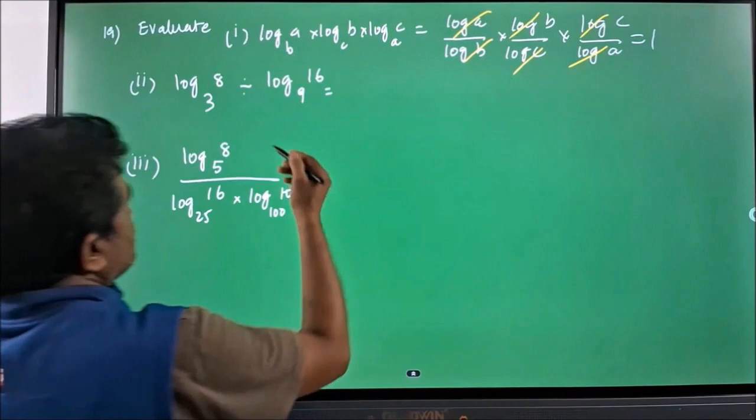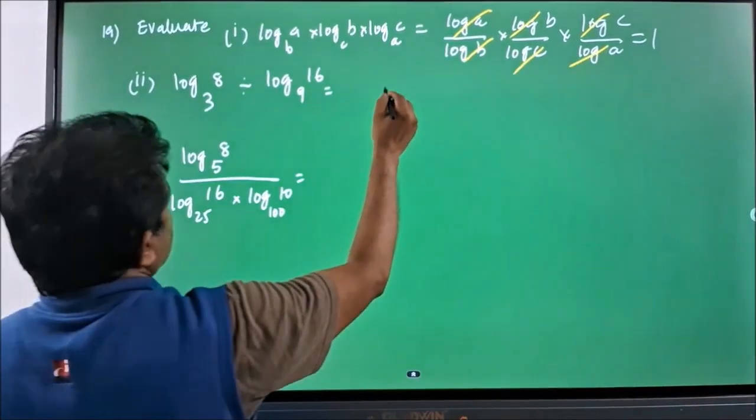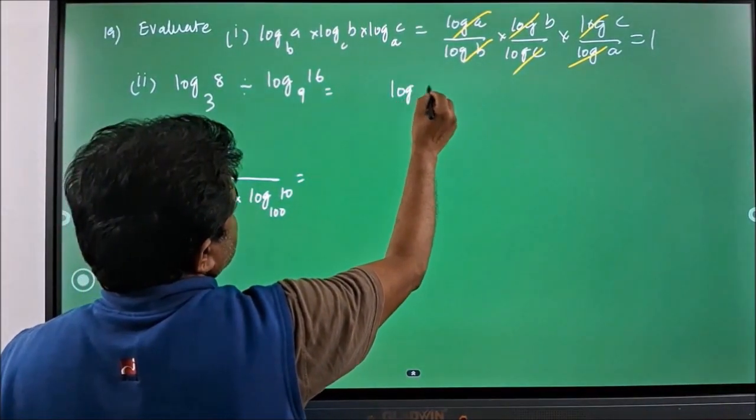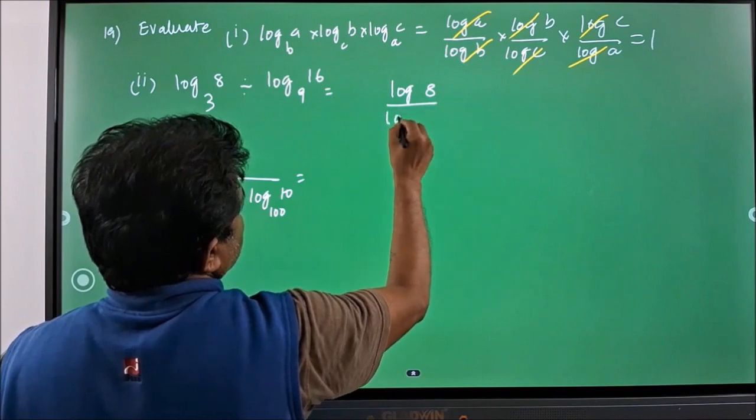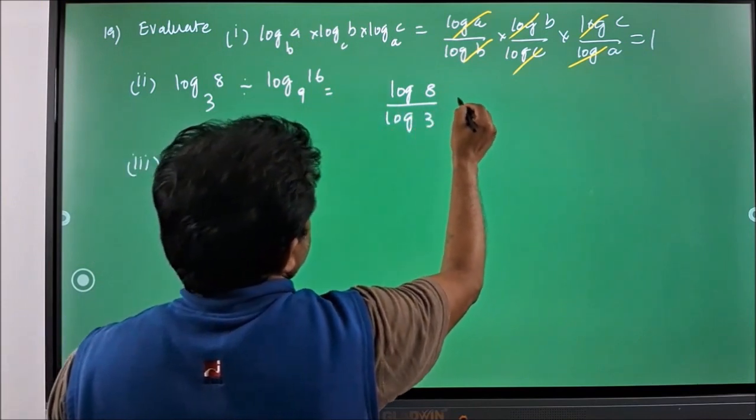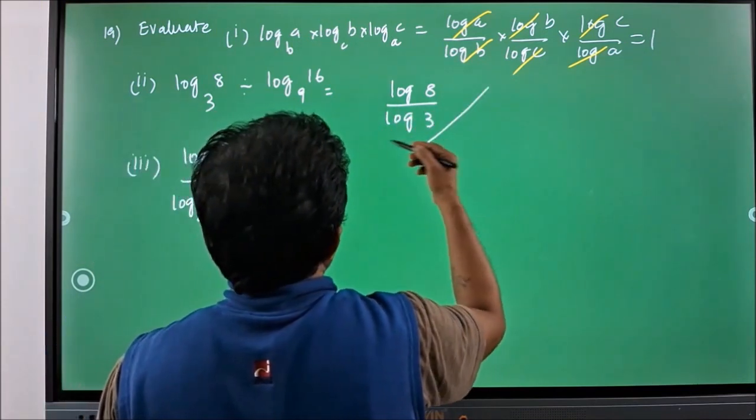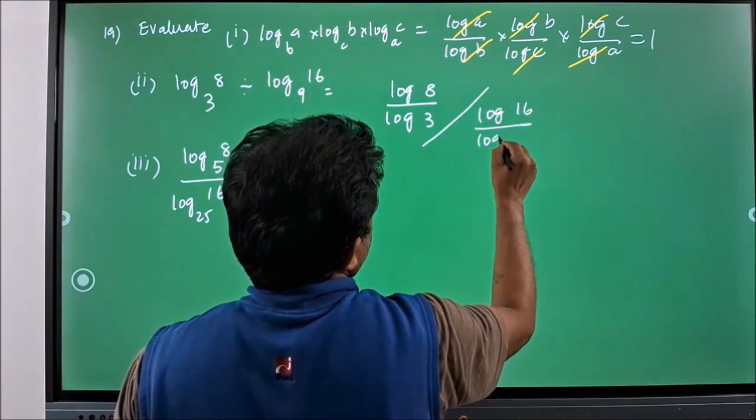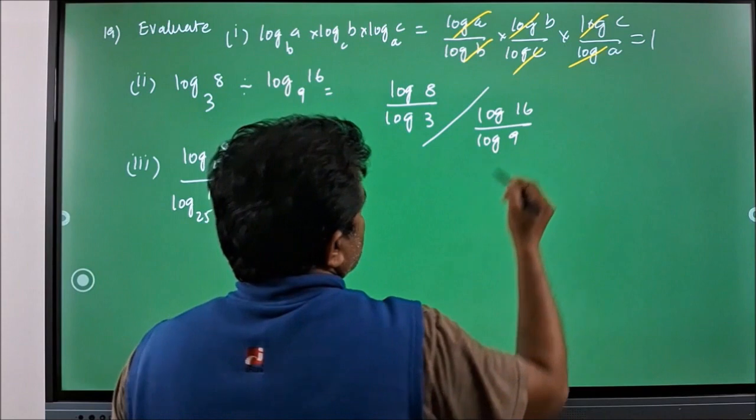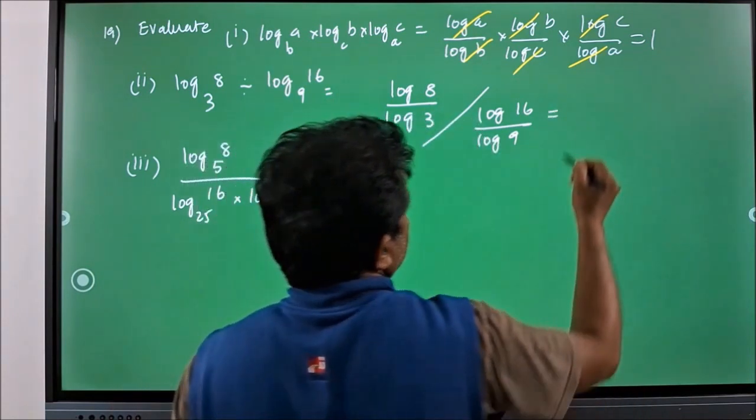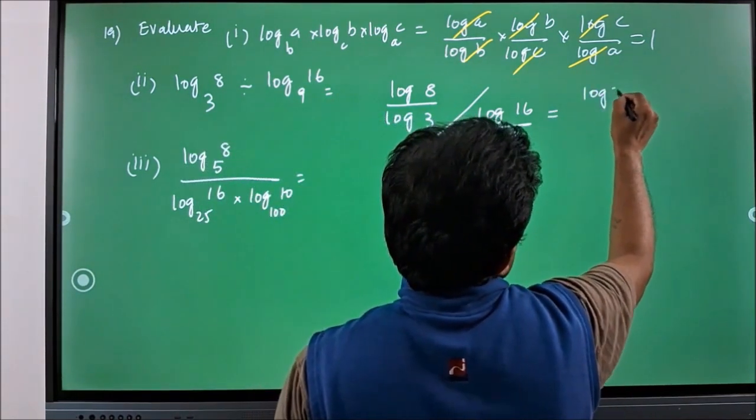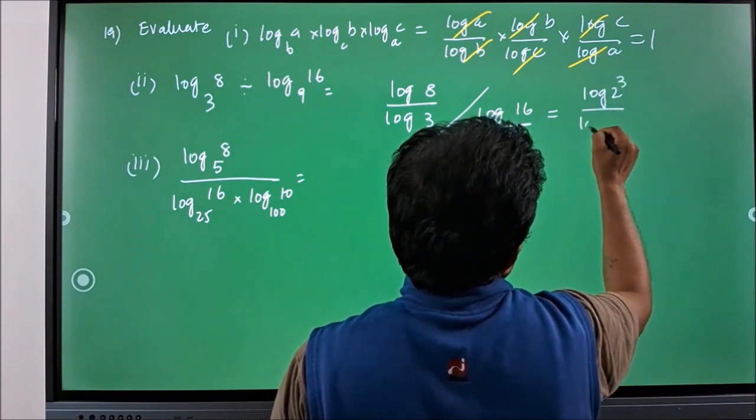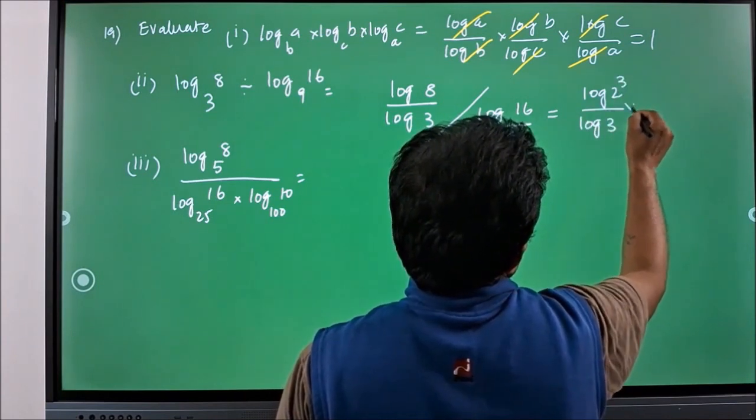Come to the second one. Log 8 can be written as log 8 by log 3 whole divided by log 16 by log 9, which in other terms like log 2 cube by log 3 into...